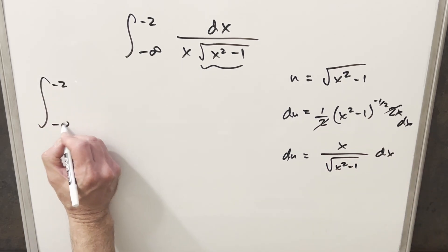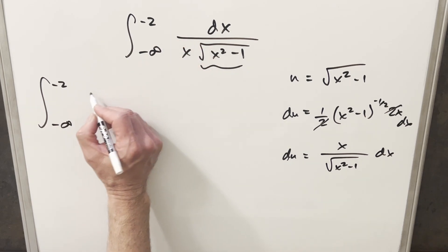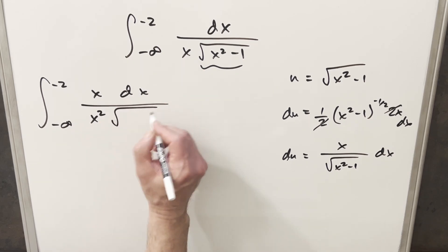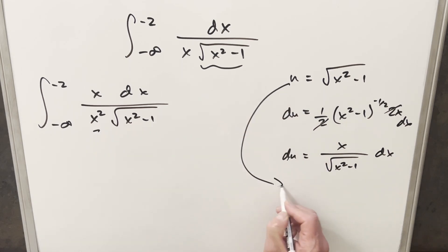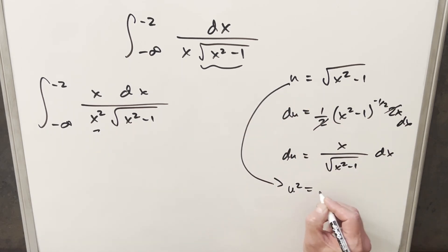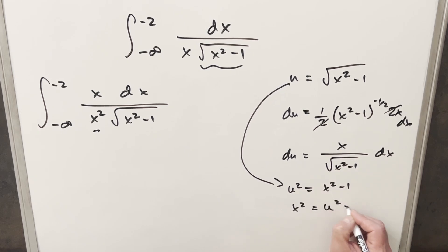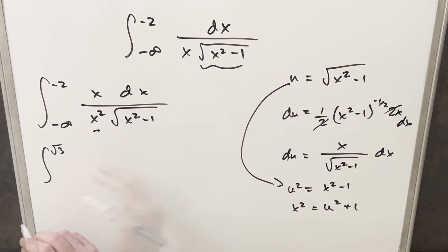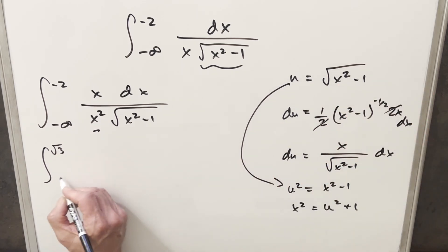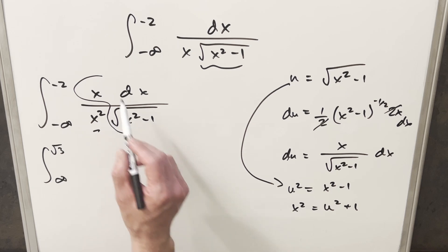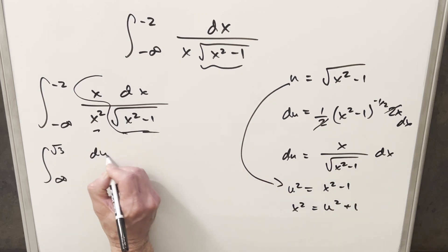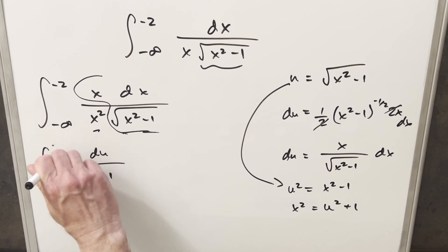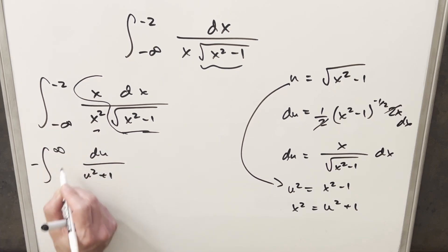To set this up I'll rewrite the integrand by multiplying by x over x to create an x in the numerator, giving x squared times the square root of x squared minus one in the denominator. Squaring both sides of u equals square root of x squared minus one gives u squared equals x squared minus one, so x squared equals u squared plus one. Plugging in the bounds: minus two gives the square root of three as the upper bound, and minus infinity gives positive infinity. Flipping the bounds introduces a minus sign, so we integrate from square root of three to infinity.